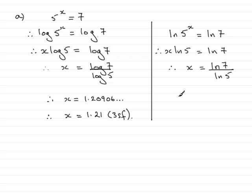And when you work that out, you'll get exactly the same answer: 1.20906 and so on, which, when rounded to 3 significant figures, is going to be 1.21 to 3SF.